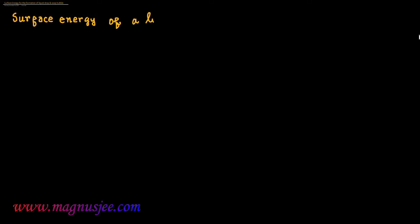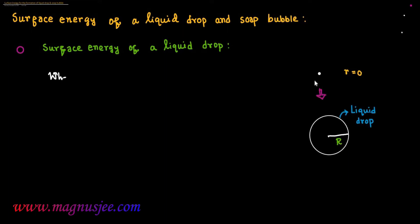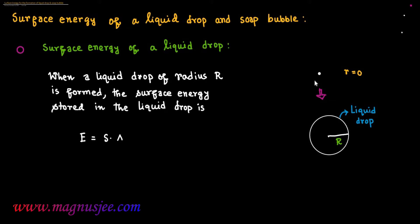Let us discuss the topic: the surface energy of a liquid drop and a soap bubble. In the diagram, we have a point liquid drop of initial radius r equals 0, and it is blown into a liquid drop of radius capital R. When a liquid drop of radius R is formed, the surface energy stored in the liquid drop will be E equal to S dot delta A — the product of surface tension and change in area.